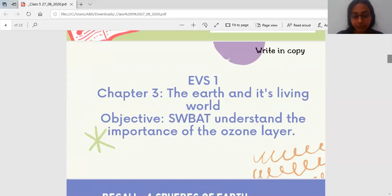After that we are going to move on to our EVS 1 chapter that is the earth and its living world. Today's objective is: students will be able to understand the importance of the ozone layer. We will learn about ozone layer.